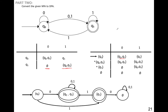If you notice, the number of states corresponds to the power set of Q. Whenever I have a number of states in an NFA, I need to create states equal to the power set of Q for the equivalent DFA.